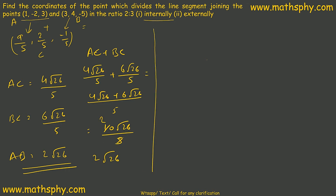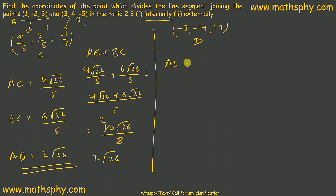Now let's look at external division. When it splits externally, the point of coordinates is (−3, −14, 19). Let's call this point D. We find: AD = 4√26, BD = 6√26, and AB = 2√26 as already calculated.